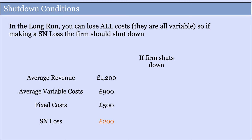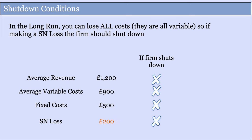In the long run, all costs become variable, so if you shut down you can lose all costs including fixed ones. This means even if you're making a positive contribution in the short run, in the long run you're better off closing than taking a £200 loss. Summary of shutdown conditions: in the long run, if you're making a supernormal loss, shut down. In the short run, if average revenue exceeds average variable cost, stay open; if average revenue is less than average variable cost, shut down.